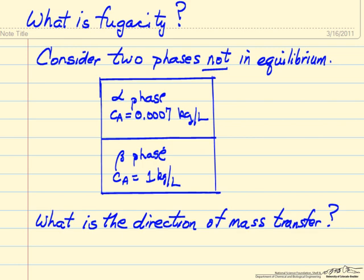Initially these phases are not in equilibrium. The question is, which direction does component A move? What's the direction of mass transfer to get to equilibrium?